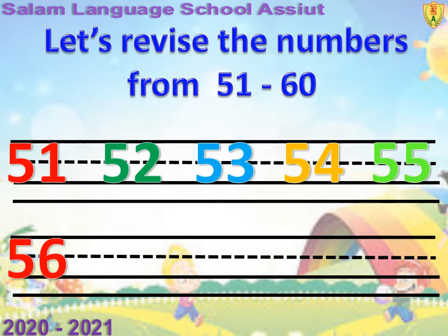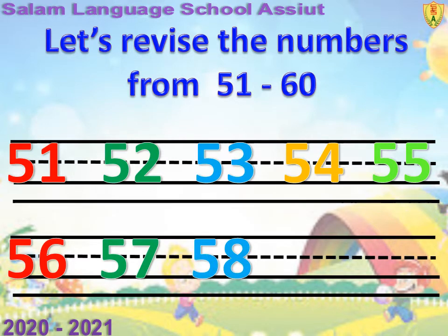56. After 56, 57. After 57, 58. But after 58, it's a number of numbers — bravo, it's 59.